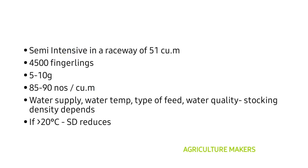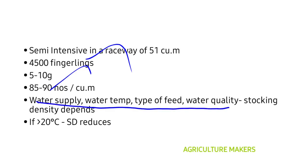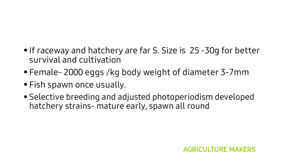A semi-intensive cultivation of trout in a raceway of 51 cubic meters involves a stocking density of 4,500 fingerlings at a size of 5 to 10 grams, which is 85 to 90 fingerlings per cubic meter. Water supply, water temperature, type of feed, and water quality all directly influence stocking density. If temperature raises beyond 20 degrees centigrade, stocking density reduces abruptly. If the distance between the cultivation area and the hatchery is large, the fingerling size should be 25 to 30 grams for better survival.